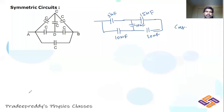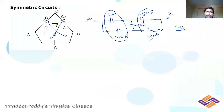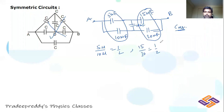Let us solve one more question. You have different capacitors connected between point A and point B and should find the effective capacitance. Immediately identify this as a Wheatstone bridge and check if it is balanced. The ratio: 5 μF / 10 μF = 1/2, and 15 μF / 30 μF = 1/2. Both ratios are equal, therefore the bridge is balanced.